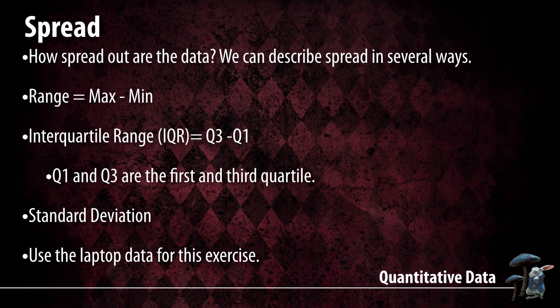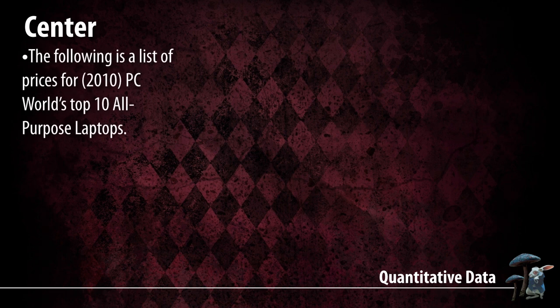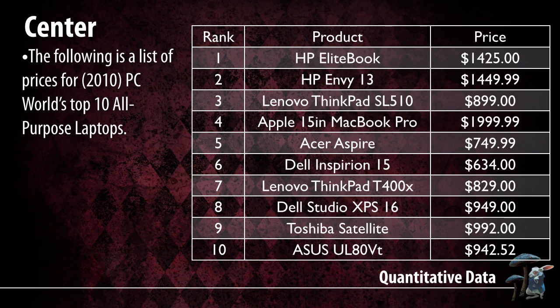Anytime you're given a distribution — for example, 10 different prices for laptops in 2010 — and you want to describe that distribution, you need to give some measure of shape, some measure of center, and some measure of spread. You look at the numbers, maybe graph them, and calculate a few things to determine whether it's symmetrical or skewed. That's what we're going to look at next.